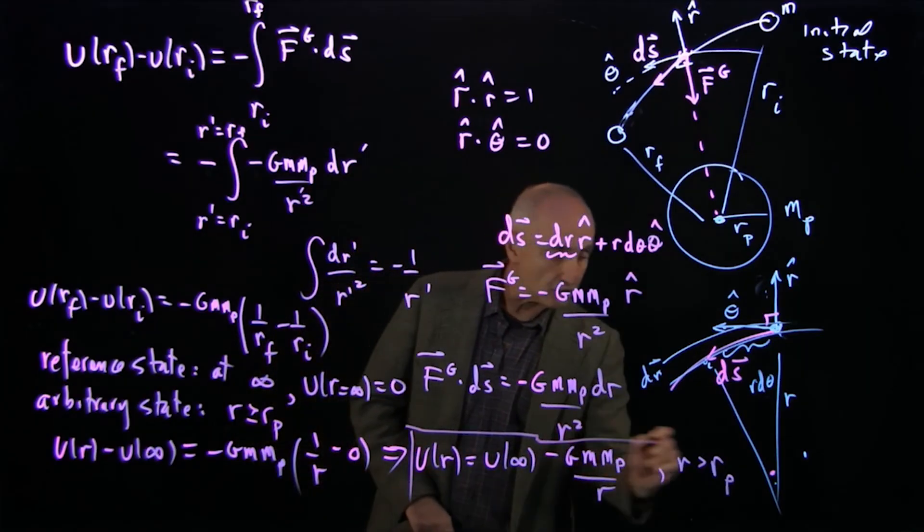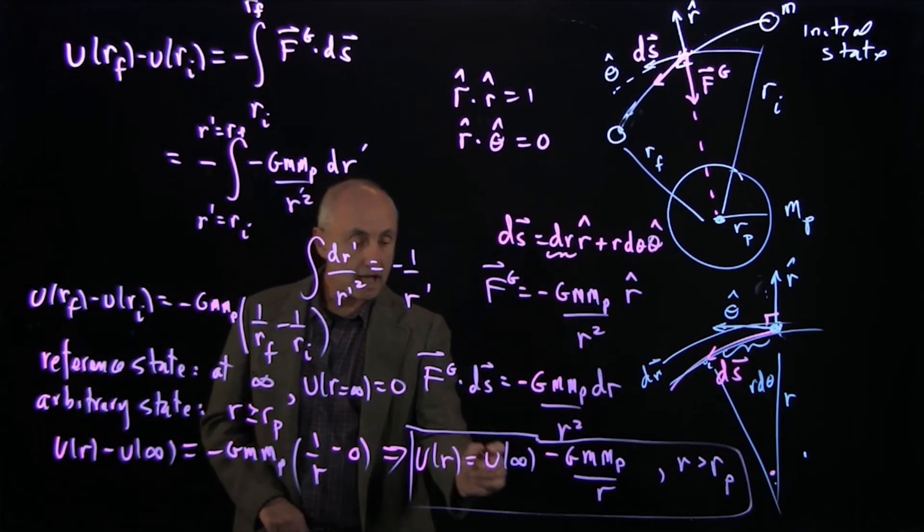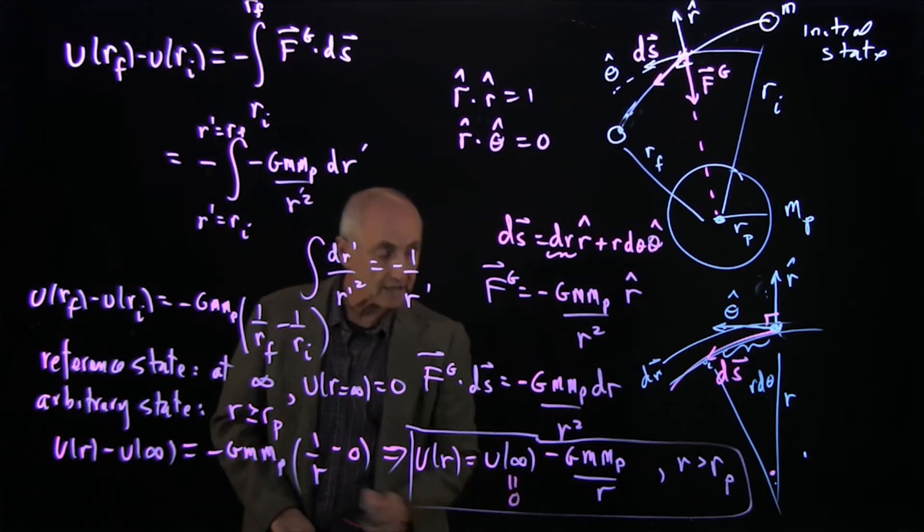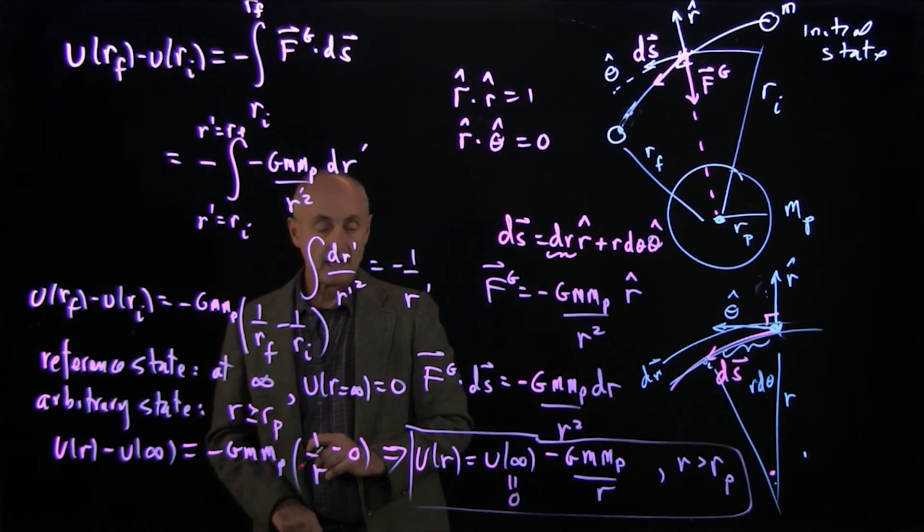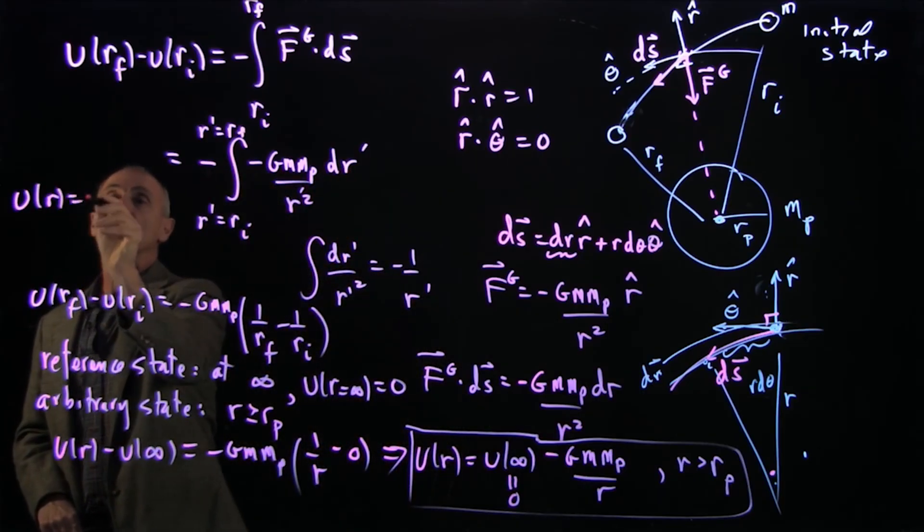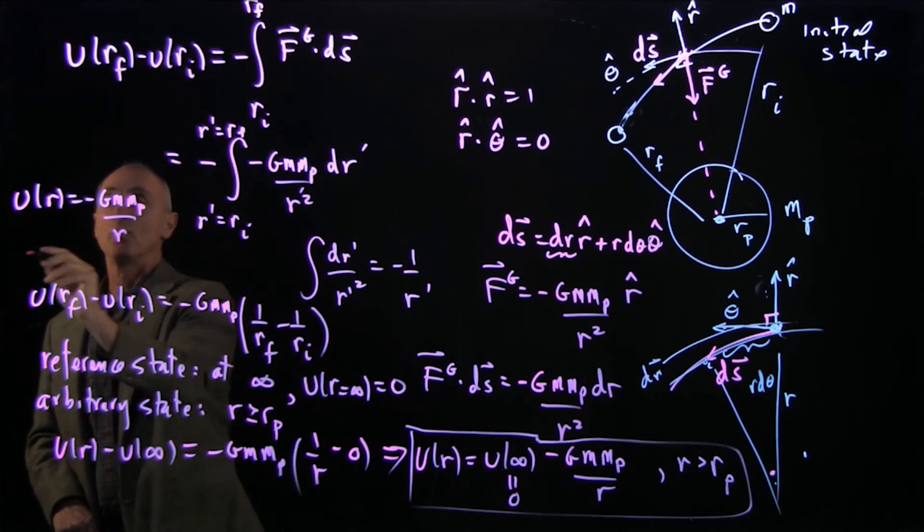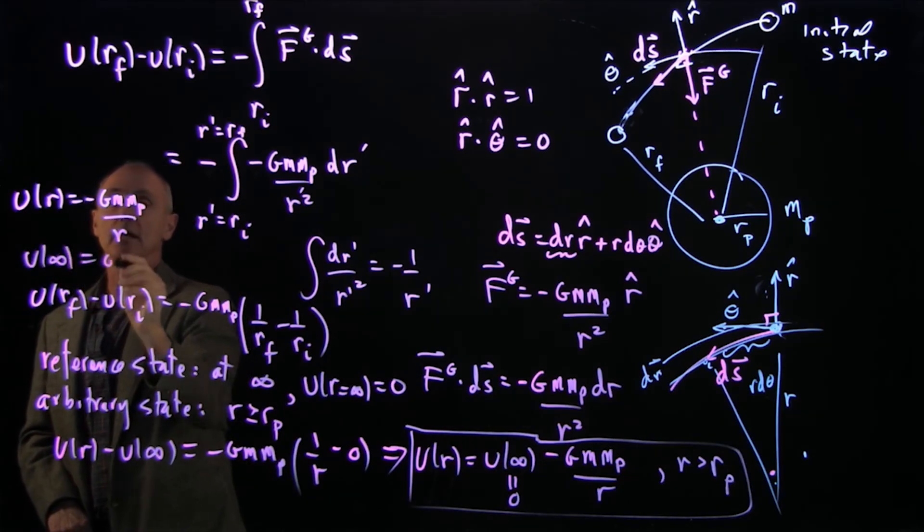And that is the potential function for the gravitational problem. But now, remember, we're choosing that to be our reference point. And so the real conclusion is U(r) equals minus G m mp over r with U at infinity equal to 0.